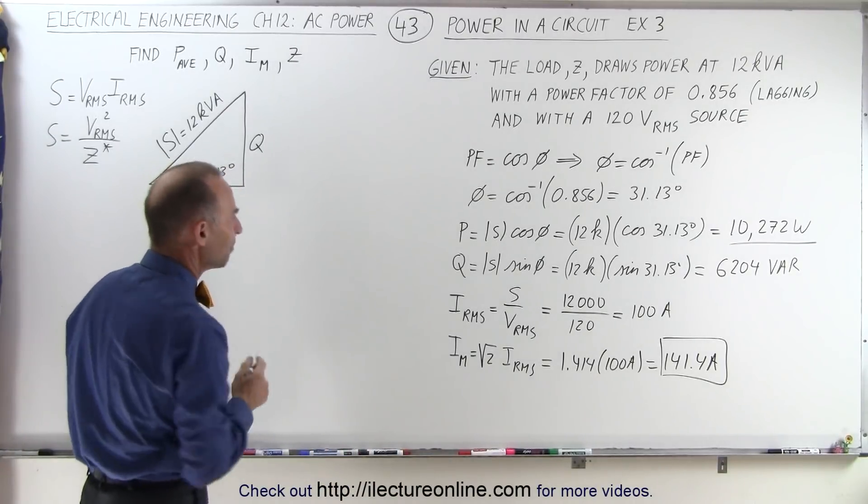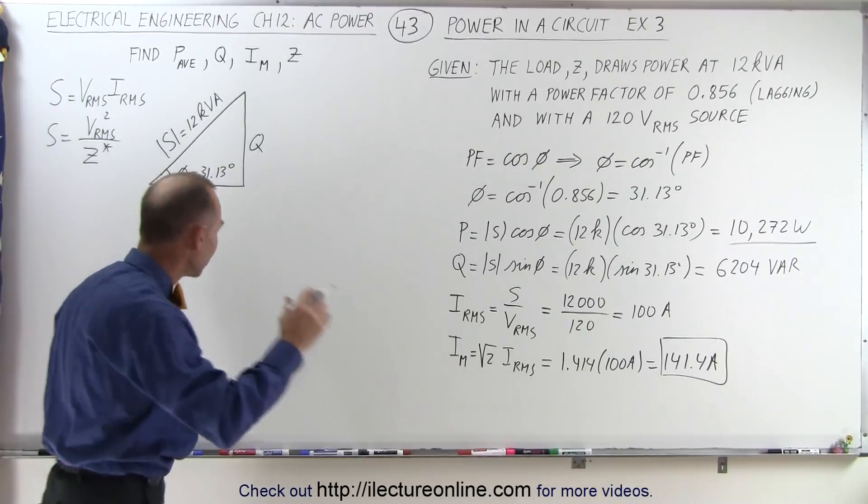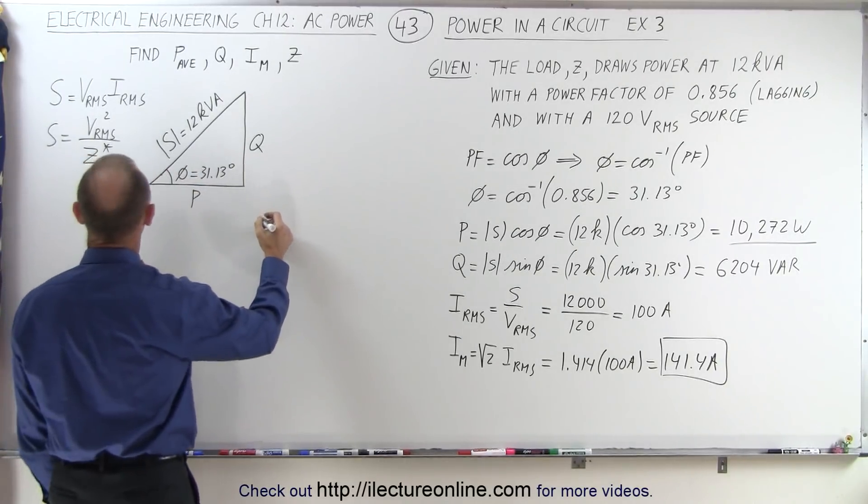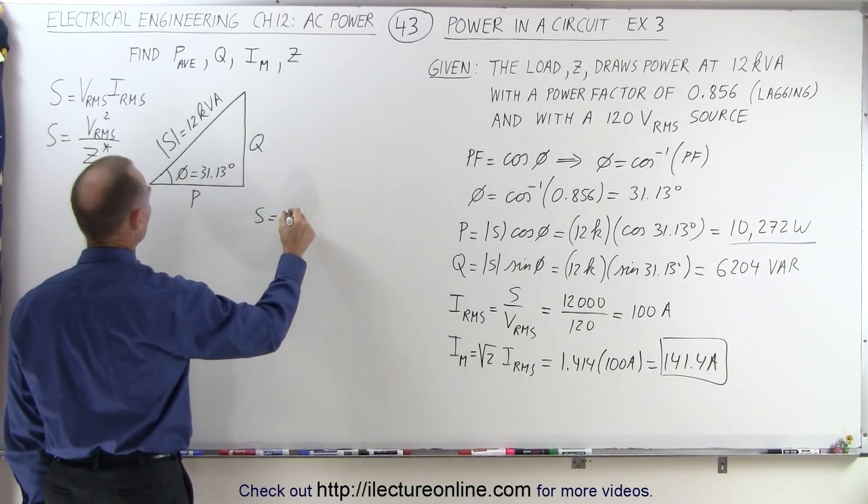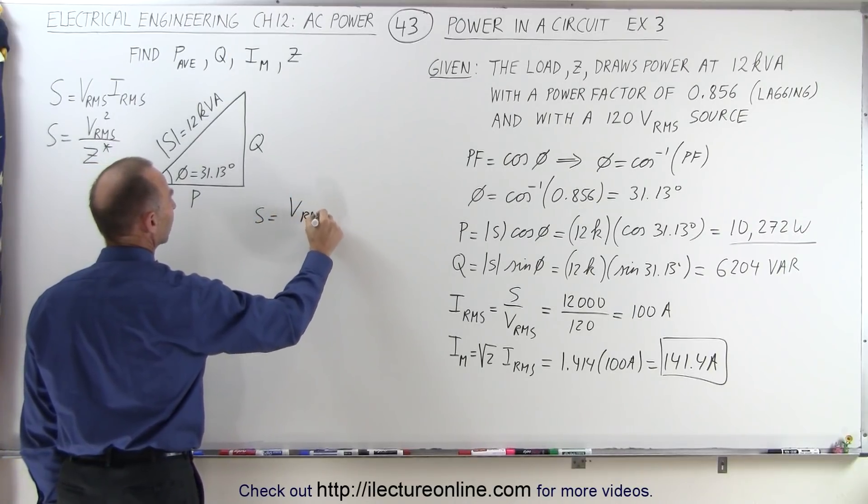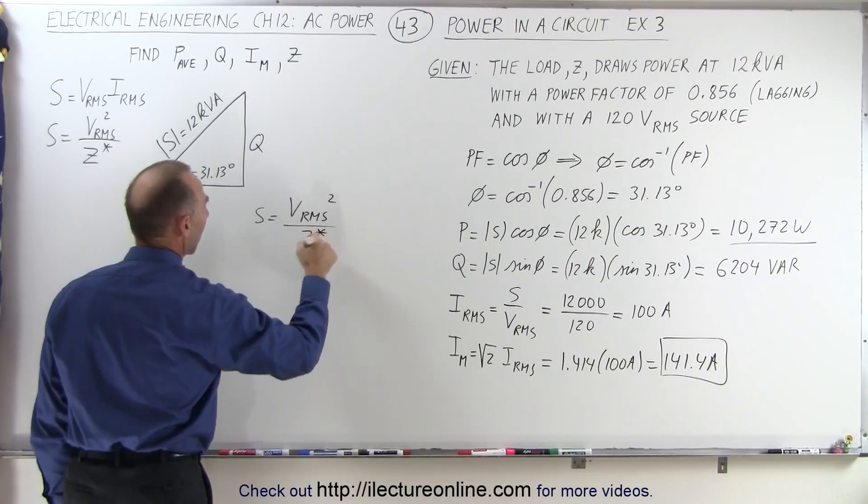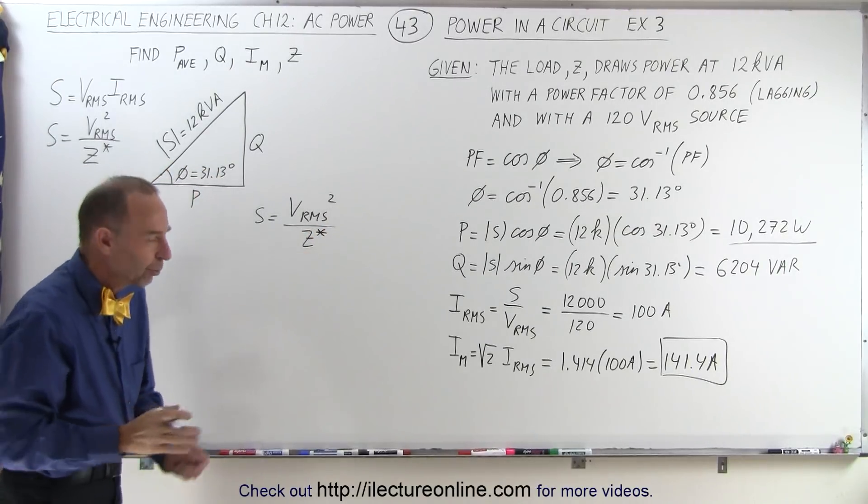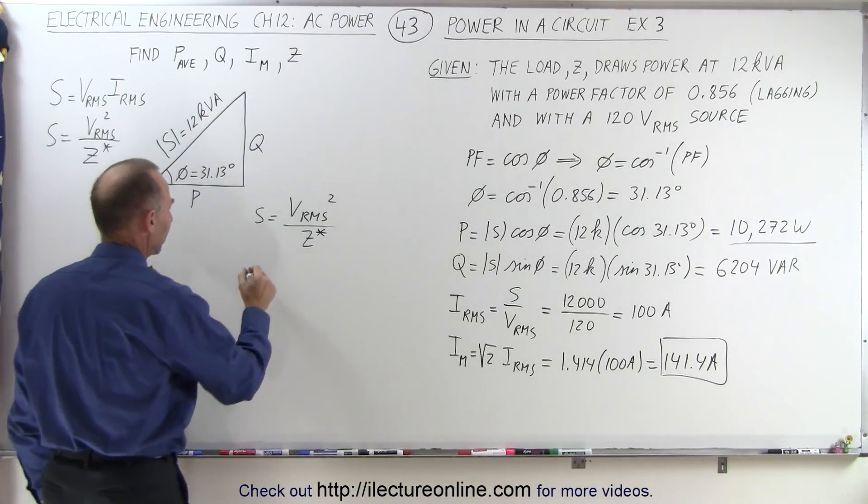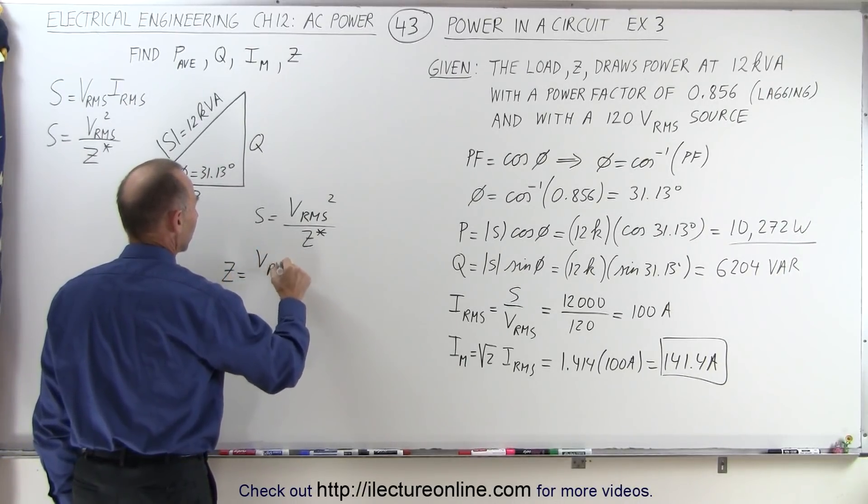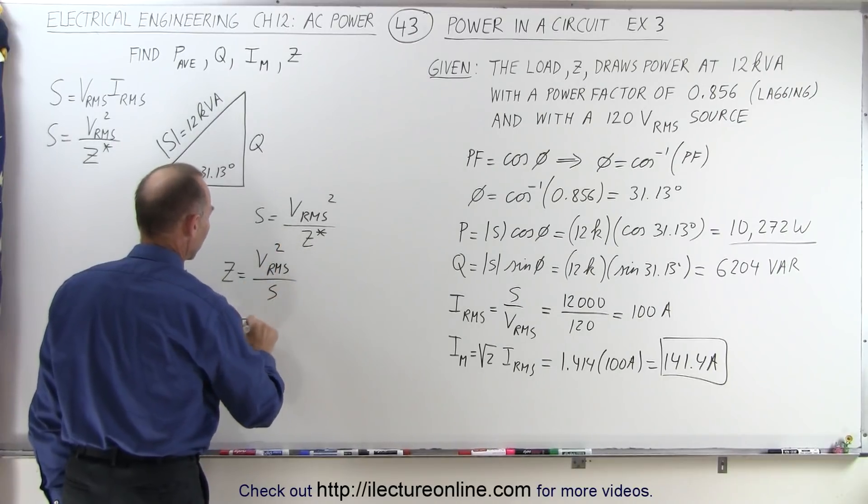Next, what we're trying to do is find the impedance. How do we find impedance? Let's go to this equation right here. We can see that S is equal to VRMS squared divided by the complex conjugate of the impedance. But since we're just looking for the magnitude impedance, we don't have to worry about that. So Z is equal to VRMS squared divided by S.